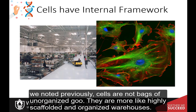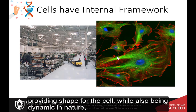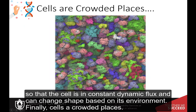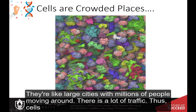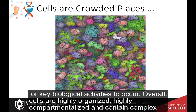As we noted previously, cells are not bags of unorganized goo. They are more like highly scaffolded and organized warehouses. Cells contain protein scaffolds, such as tubulin and actin, that create a cytoskeleton. The cytoskeleton is strong and rigid, providing shape for the cell while also being dynamic in nature, so that the cell is in constant dynamic flux and can change shape based on its environment. Finally, cells are crowded places. They are like large cities with millions of people moving around. There is a lot of traffic. Thus, cells must be very organized so that the correct molecules are trafficked to the correct locations for key biological activities to occur.